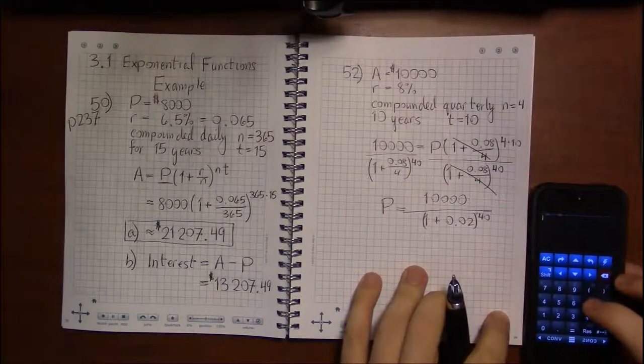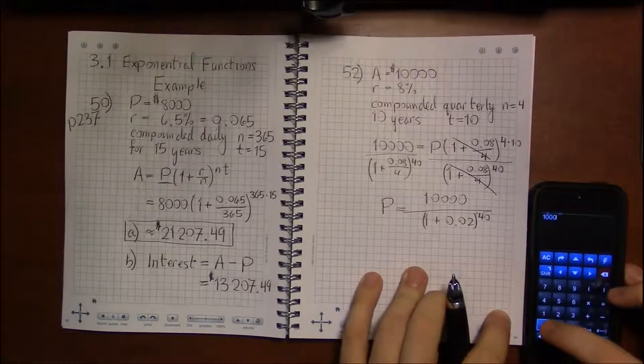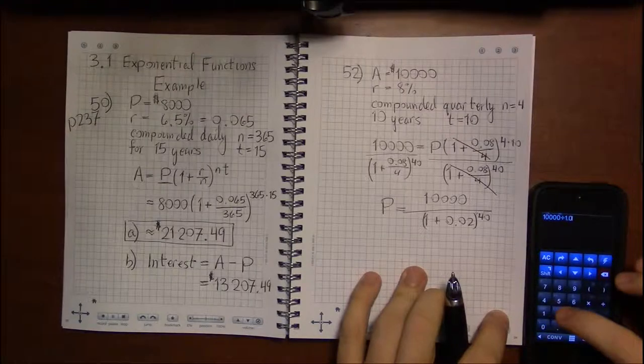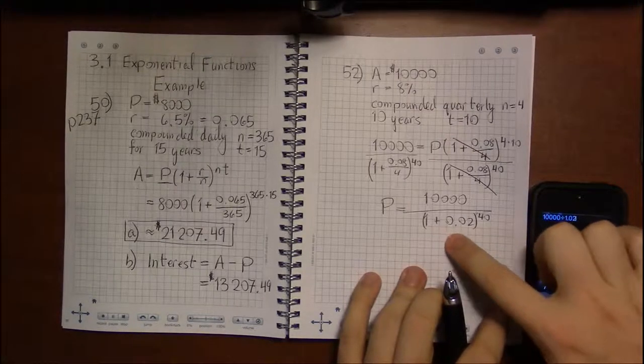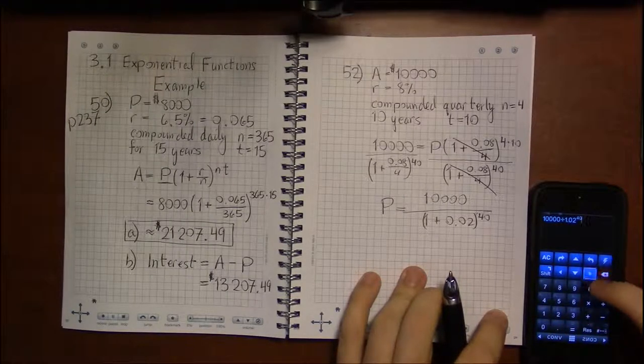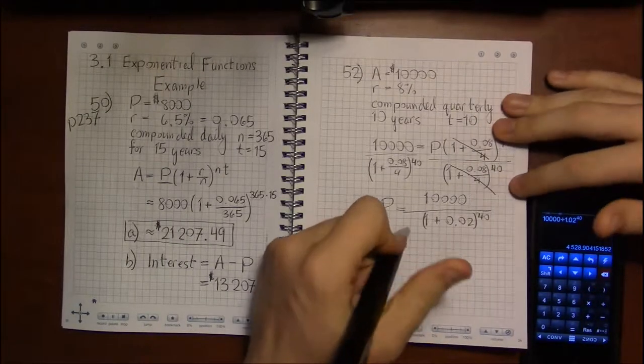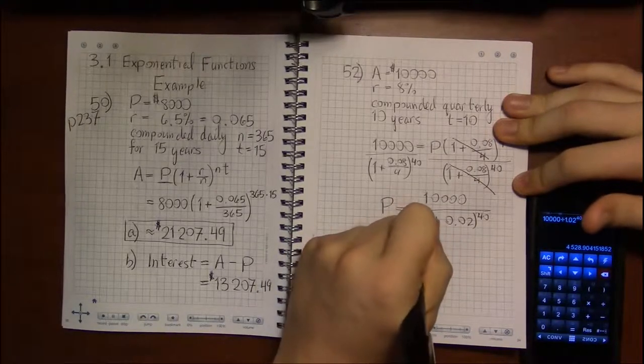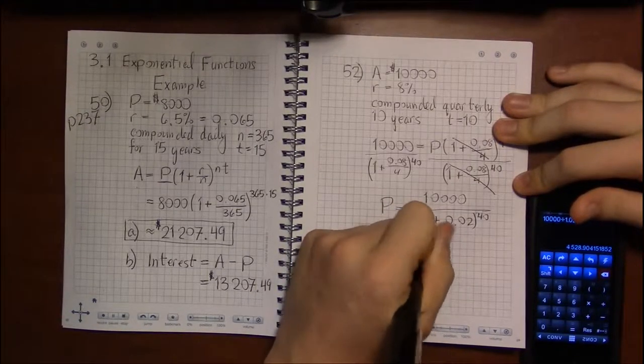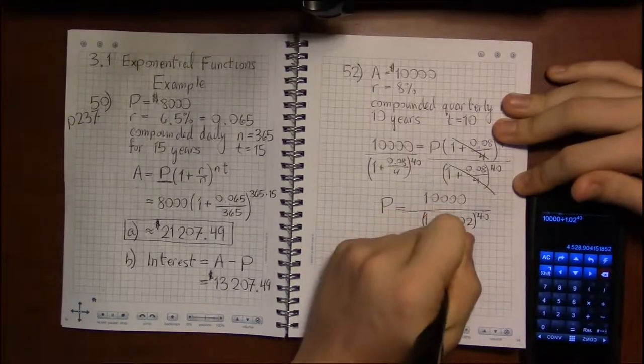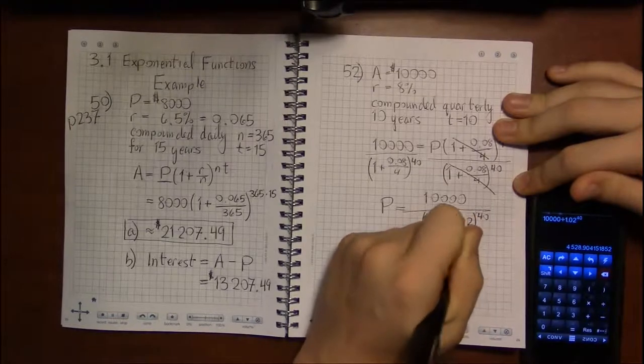So again, we're going to have to go to the calculator because this is not something you can work out in your head. So I'm going to do 10,000 divided by 1.02 to the 40th power, and I'm going to get that roughly we should put into the account $4,528.91.